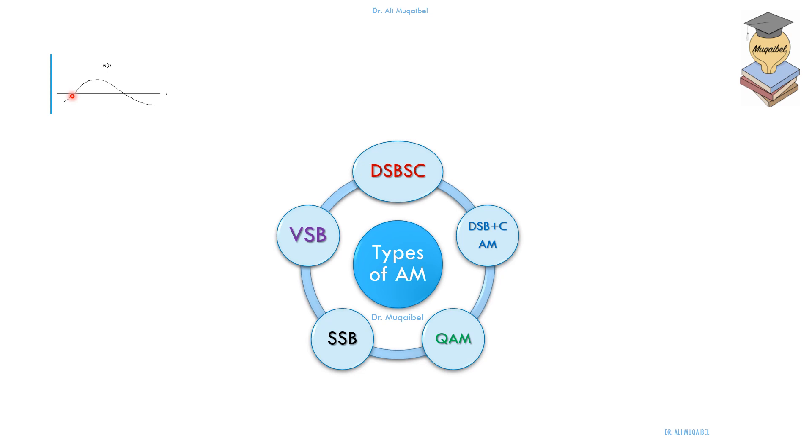We start with a message. In time domain, this message is taking the following shape, positive and then negative. And we assume that this message has a Fourier transform. For simplicity, we'll draw a triangle. This is the Fourier transform of the unmodulated message.